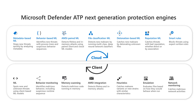The reputation ML engine — ML standing for machine learning — uses reputation sources and models from across Microsoft that are queried to block threats linked to malicious or suspicious URLs, domains, emails, and files. Some of these sources include Windows Defender SmartScreen for URL reputation models and Office 365 Advanced Threat Protection for email attachment signals, among other Microsoft services through the Intelligence Security Graph.